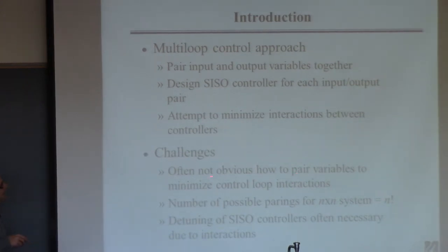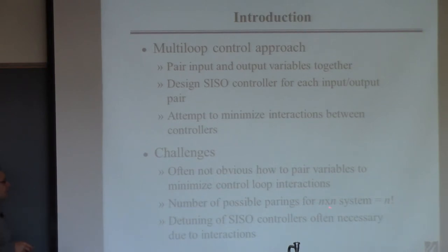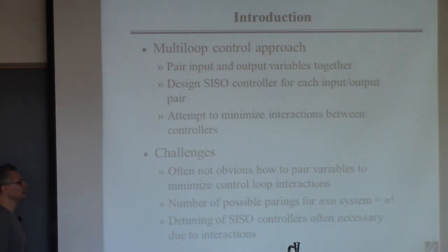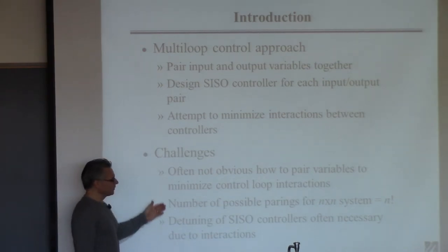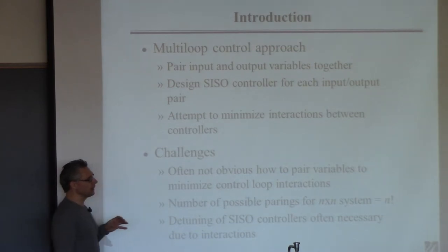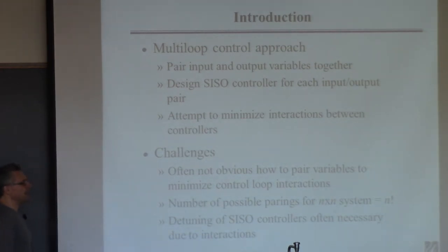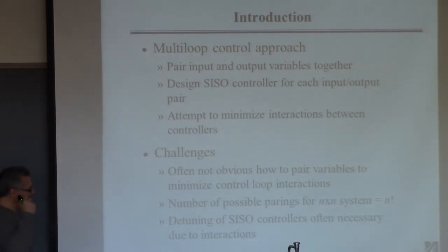In many cases you can look at the physics or structure of the problem and compare variables based on physical considerations. Sometimes you can't. If the system is large, there are lots of pairings — the number grows as a factorial. For a two-by-two system there are two possibilities; for three-by-three there are six. It can get complex. Once we design the controllers individually, we turn them on simultaneously, and they may interact.